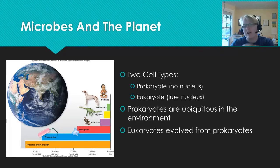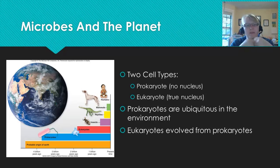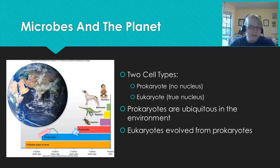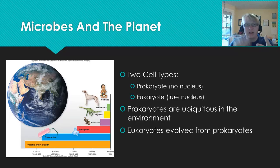We believe that all prokaryotes came from one original progenitor cell, and that some of these prokaryotes evolved into eukaryotes — cells that have a membrane-bound nucleus as well as membrane-bound organelles. These are the cells that you and I are made up of, as well as trees, plants, dogs, helminths, fungi, and protozoa.